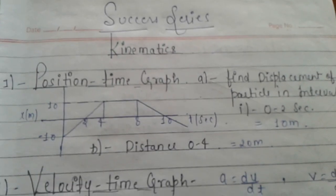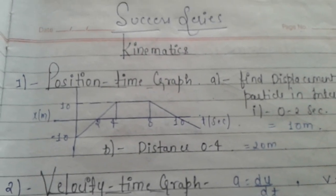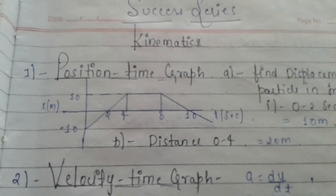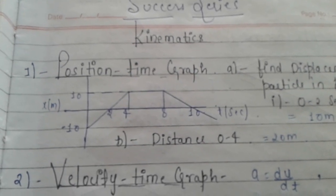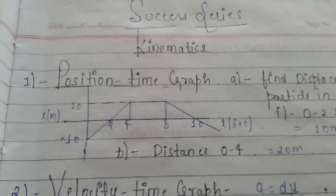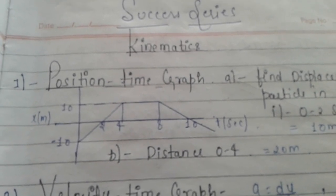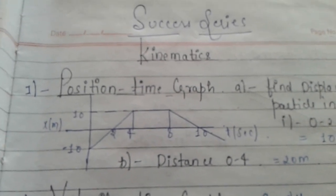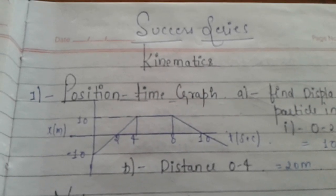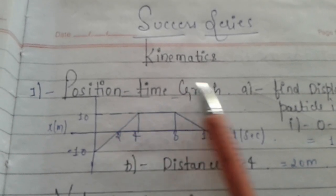To summarize: the distance of a body is measured along its whole journey, while the displacement is its final minus initial position. The first graph we will look at is the position-time graph.